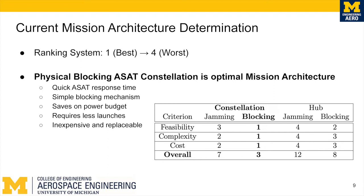Current mission architecture determination. After weighing all of the options against our design criteria, we are able to score each of the four possible design architectures, with a score of one being the best and a score of four being the worst. The physical blocking ASAT constellation design is the most optimal mission architecture. This is the best option because it allows for quick ASAT response time, has a simple blocking mechanism that saves on the power budget, requires fewer launches, and is inexpensive and replaceable. The hub model with either blocking or jamming is our alternative mission architecture.